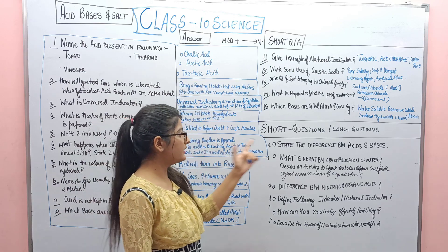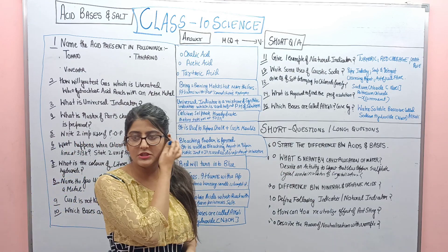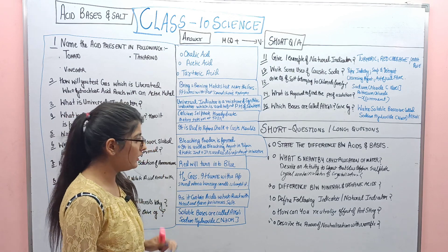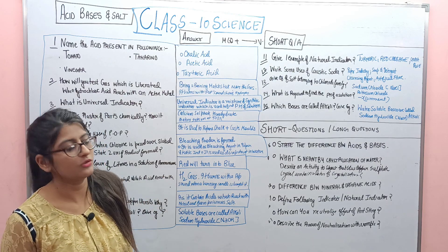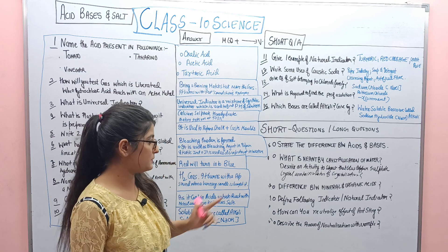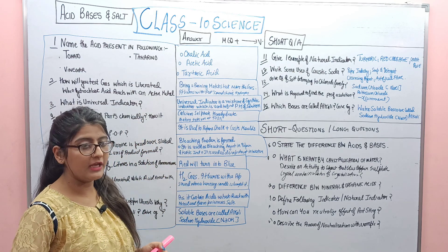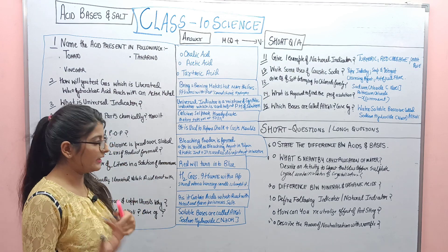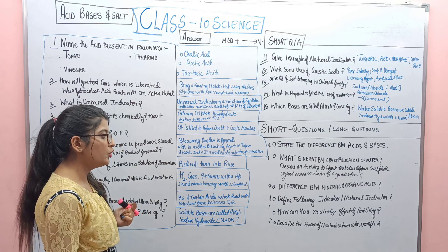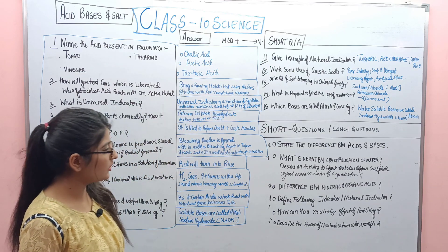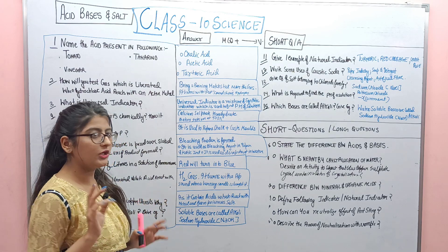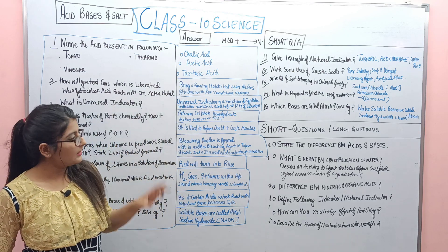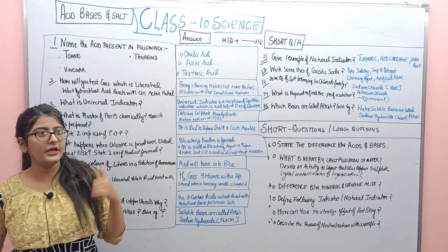The short/3-mark questions include: differentiate between acids and bases; what is meant by water of crystallization — the blue copper sulfate crystal contains water of crystallization; differentiate between mineral and organic acids; define natural indicators and synthetic indicators; how can you neutralize the effect of an ant sting; and describe the process of neutralization with an example. This last question is the most important — it is repeated twice in the sample papers.